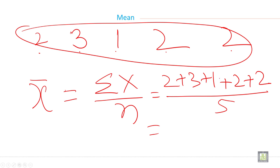So add all this. 10 divided by 5. So 2 is the mean. This is the formula and this is the procedure to calculate the mean. So average is 2.